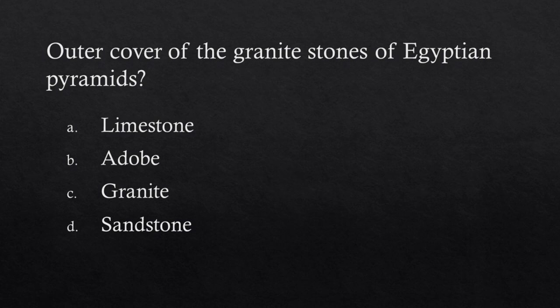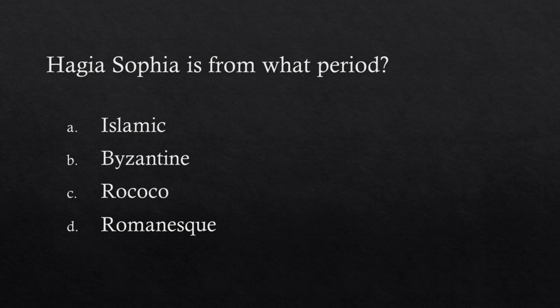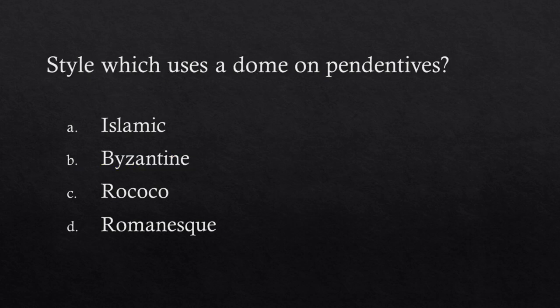What is the outer cover of the granite stones of Egyptian pyramids? Choices: Limestone, Adobe, Granite, Sandstone. Answer: Limestone. Hagia Sophia is from what period? Choices: Islamic, Byzantine, Rococo, Romanesque. Answer: Byzantine — the style which uses a dome on pendentives.